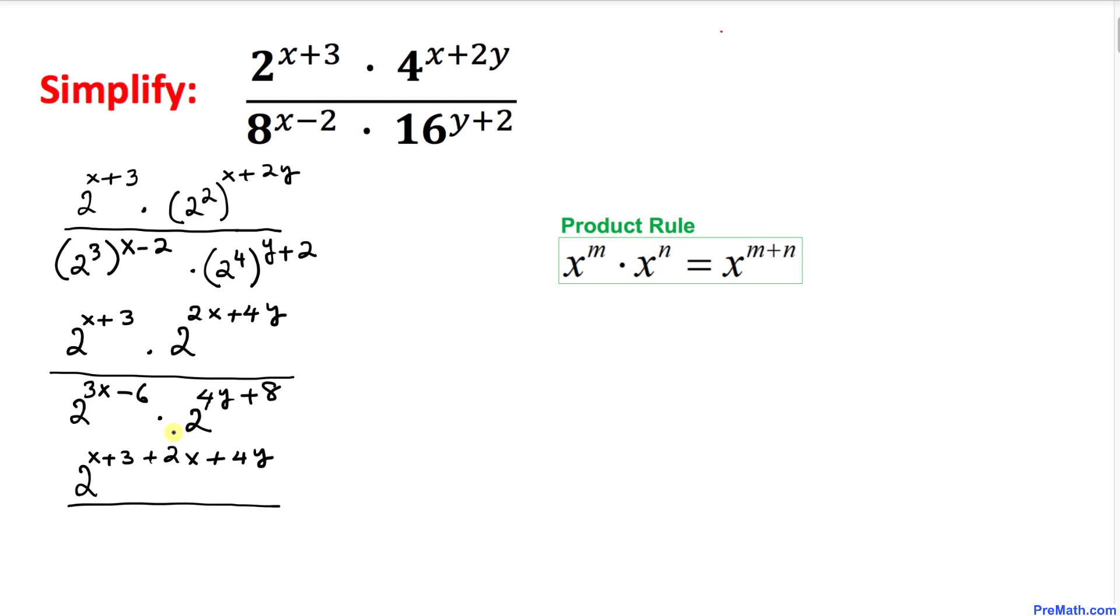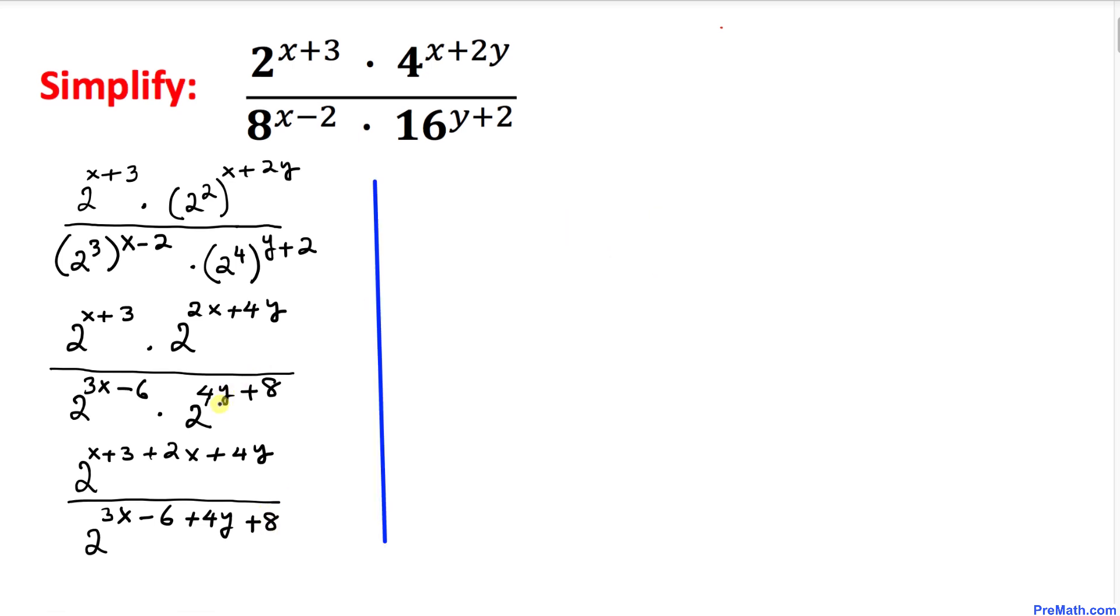Divided by—we're using the same product rule for the denominator, so this becomes 2^(3x-6+4y+8).